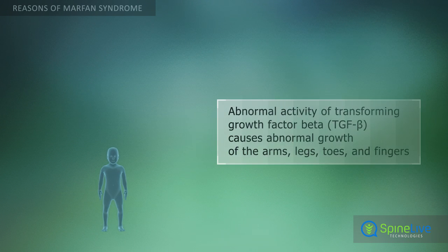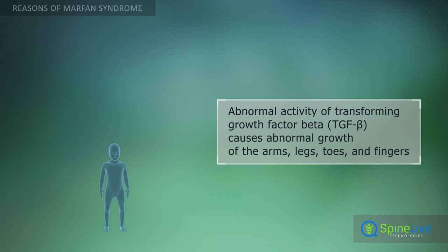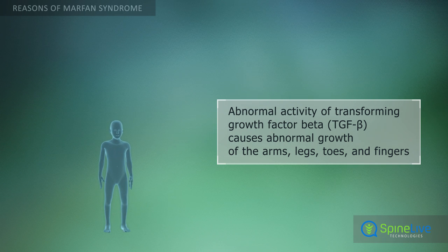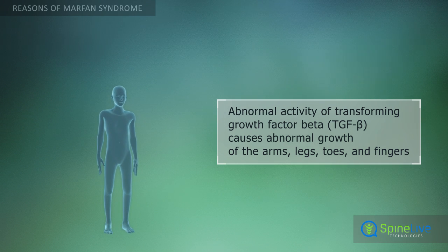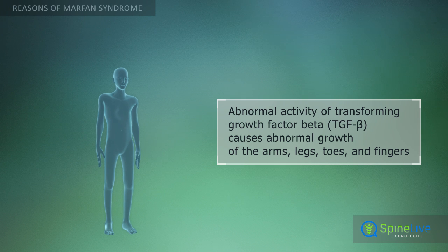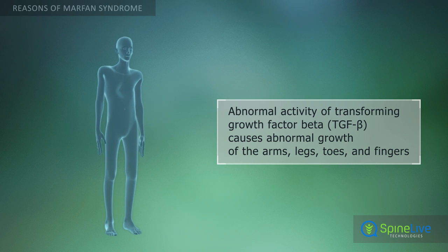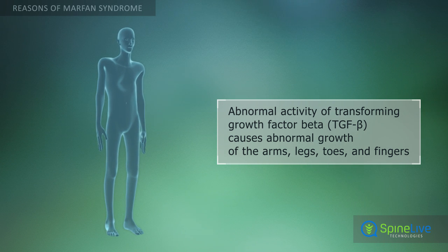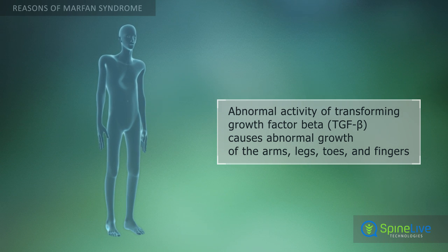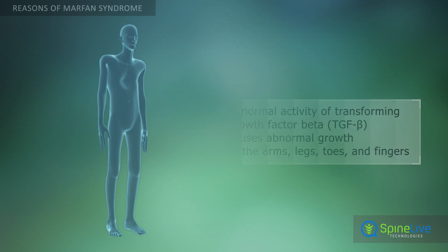Due to low levels of Fibrillin-1, transforming growth factor beta becomes abnormally active. This leads to the deterioration of elastic fibers and abnormal growth of the extremities, toes, and fingers.